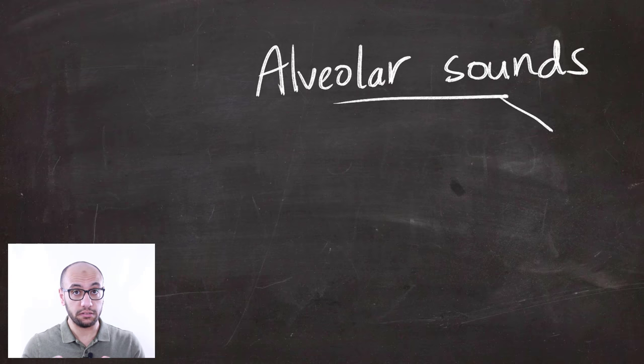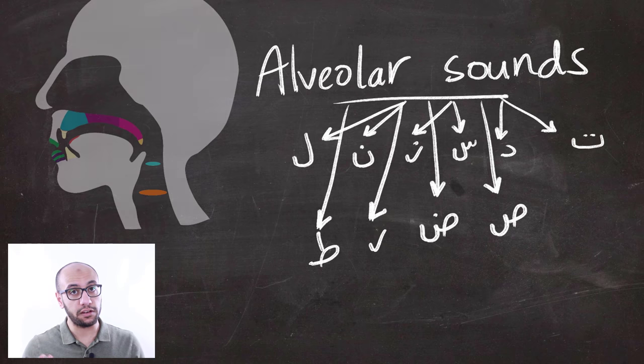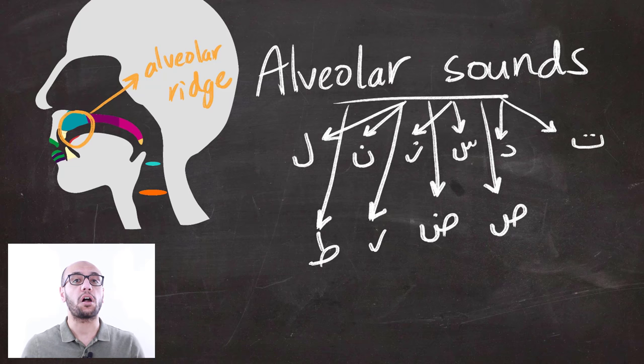In total, there are 10 sounds that are produced from the alveolar ridge. And the alveolar ridge is located right here so that you can see it properly. Most of these sounds are quite unique and they make Arabic a unique language that stands out from other languages.